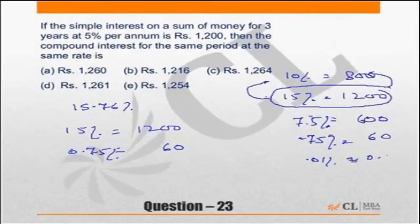0.01% is equal to 0.8. So it becomes 1,260.8. The correct answer is Rs. 1,261.